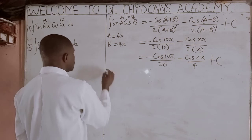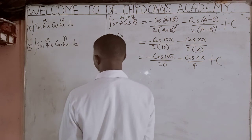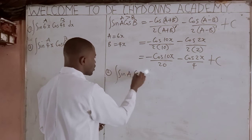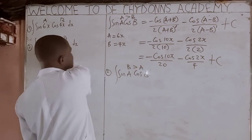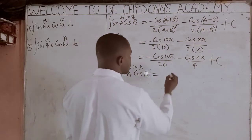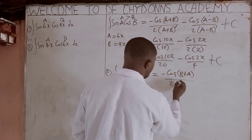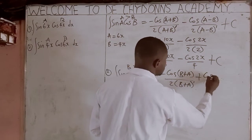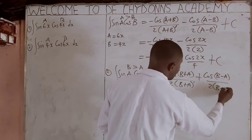Now for question number 2, you call this your A and call this your B. You ask yourself: is A smaller than B? Yes. So sin A cos B, where B is greater than A. Because B is greater than A, the shortcut will be: minus cos(B + A), all over 2(B + A)', plus cos(B − A), all over 2(B − A)'.